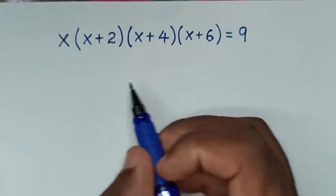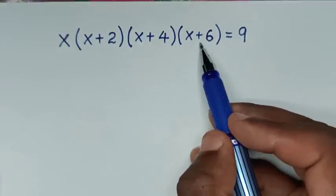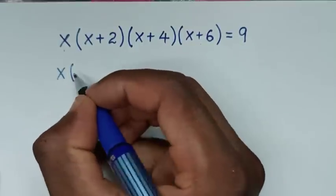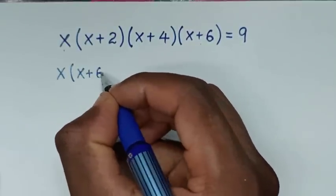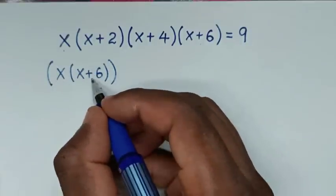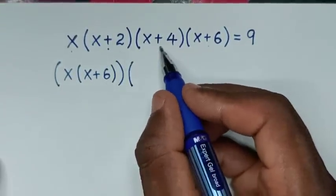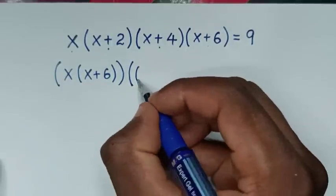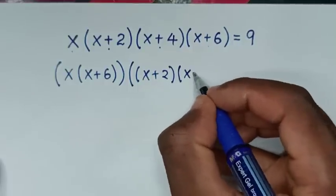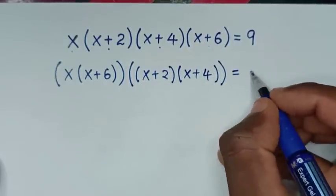In the first step, from the left side we take x times (x+6), giving x(x+6). Then we multiply that by the bracket (x+2)(x+4), so the expression becomes [x(x+6)][(x+2)(x+4)] = 9.